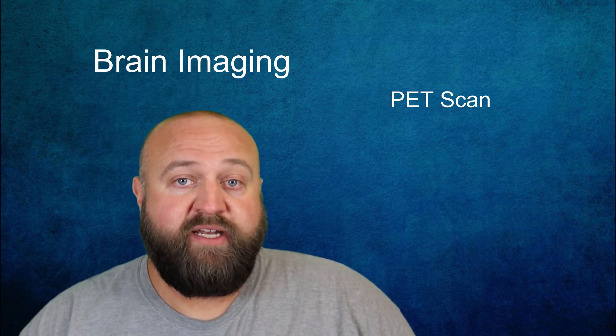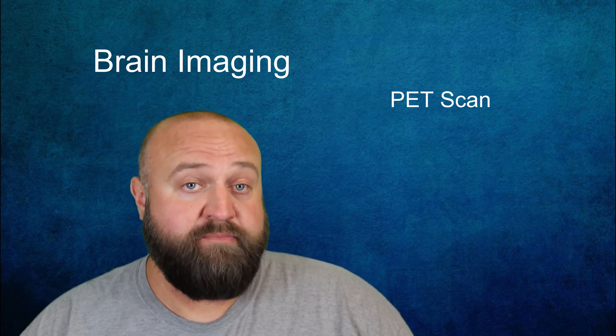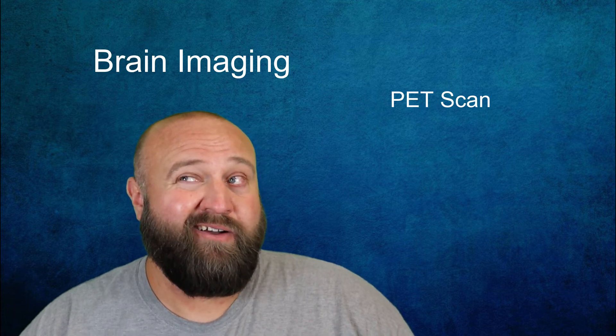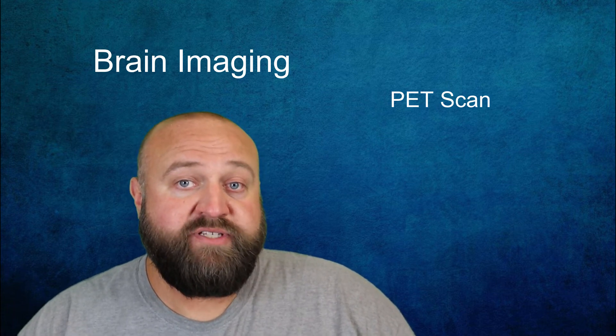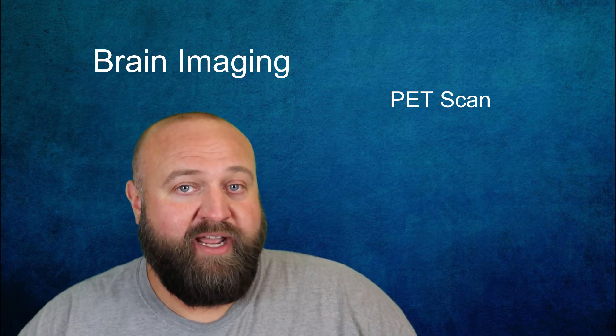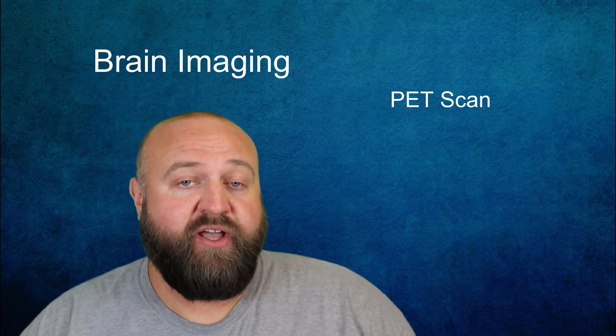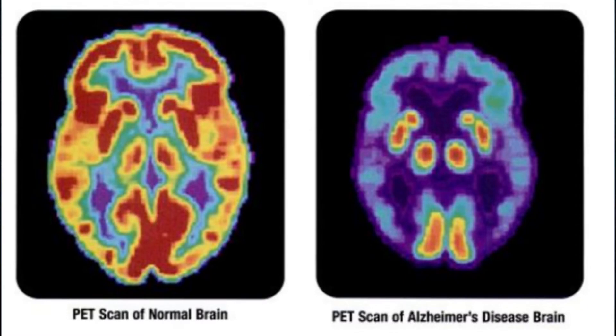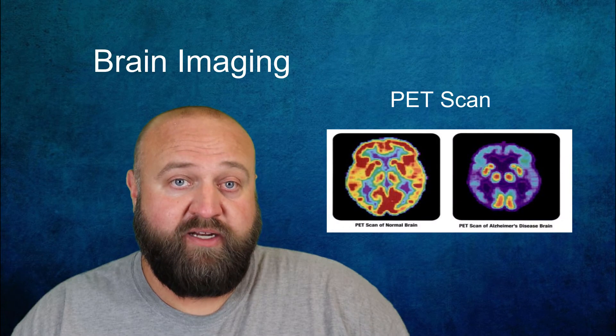A PET scan stands for positron emission tomography. Typically the way it is conducted is that a person is injected with a very mildly radioactive substance called a tracer. That goes into their bloodstream. A scan is then done of the brain to follow where that tracer goes. Essentially the more active parts of your brain are, the more blood they'll use and the more of the tracer will appear in a specific area of the brain.